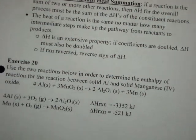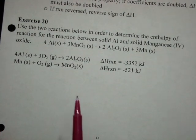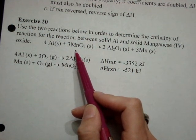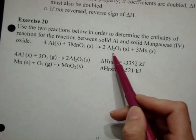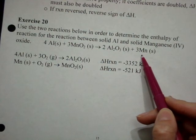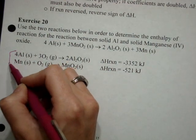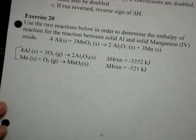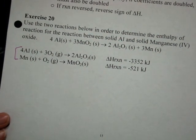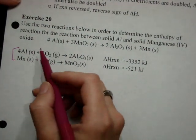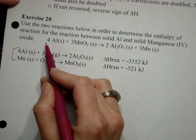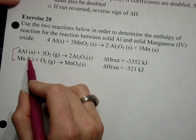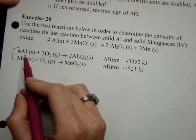For exercise number 20, we have this goal equation in mind: 4 Al plus 3 MnO2 yields 2 Al2O3 and 3 Mn. We have to use these two equations that someone has already found the values for and manipulate them to get the final equation. I see initially that I have four aluminum, and I see in my first equation that I have four aluminum. So that's a very good sign. For the time being, I'm going to leave equation one alone.